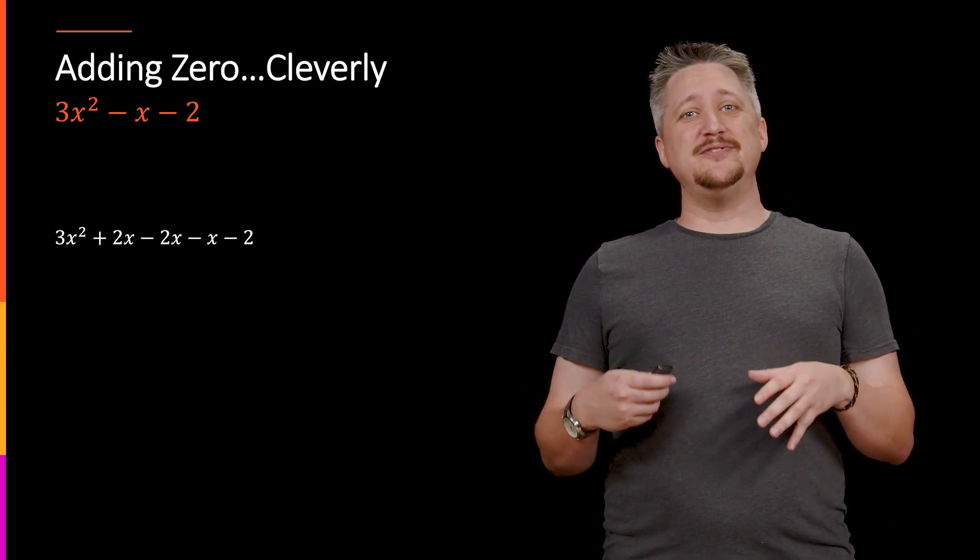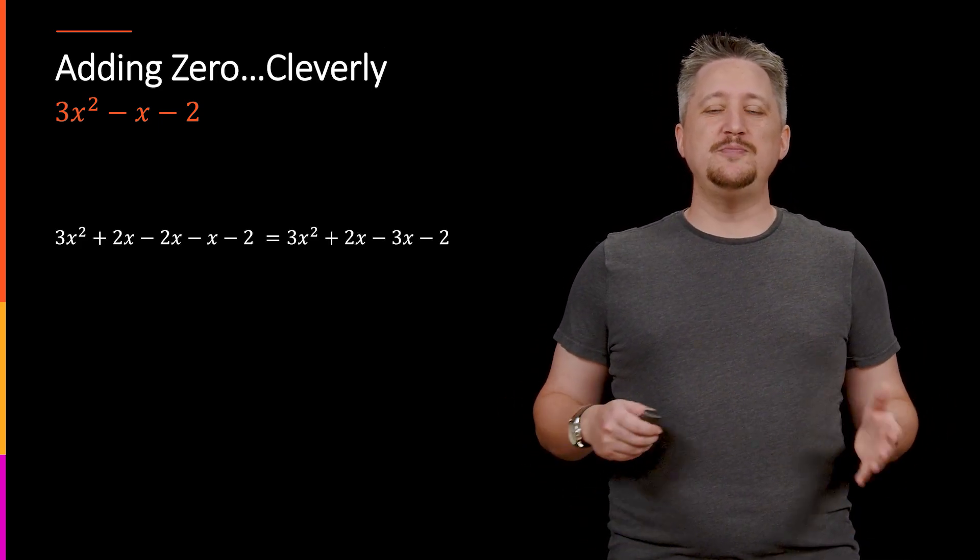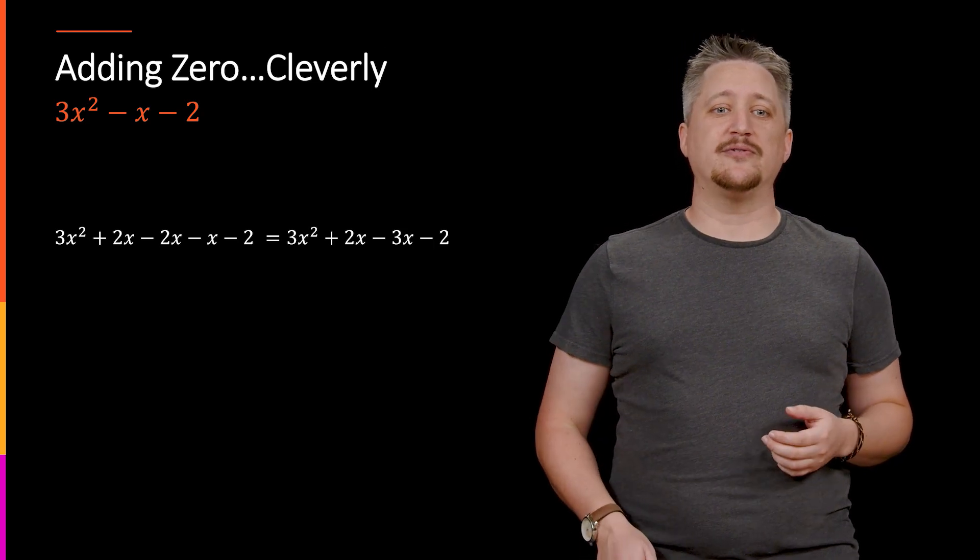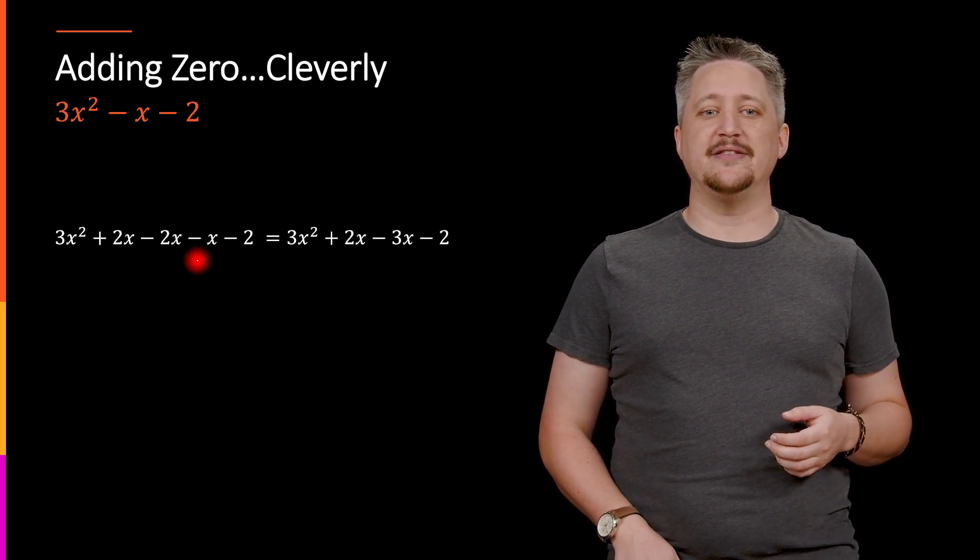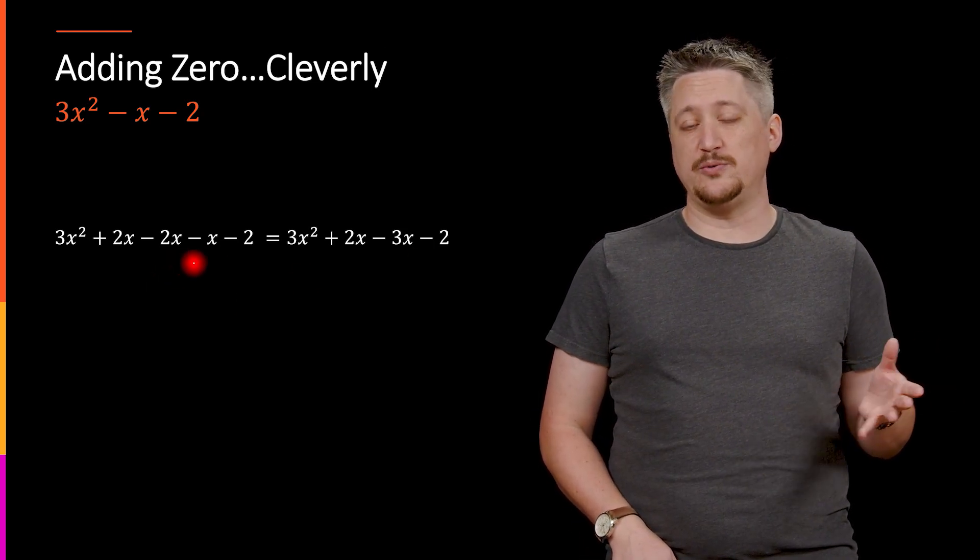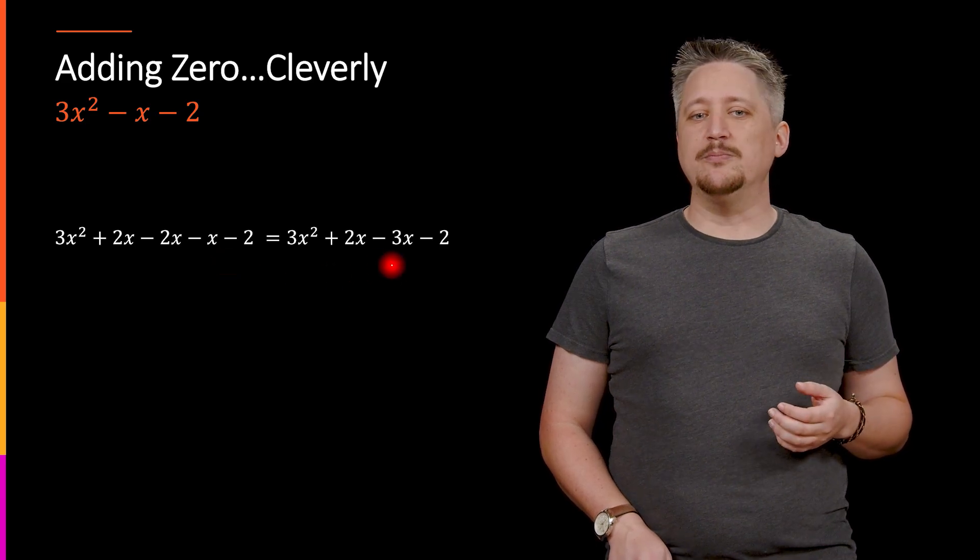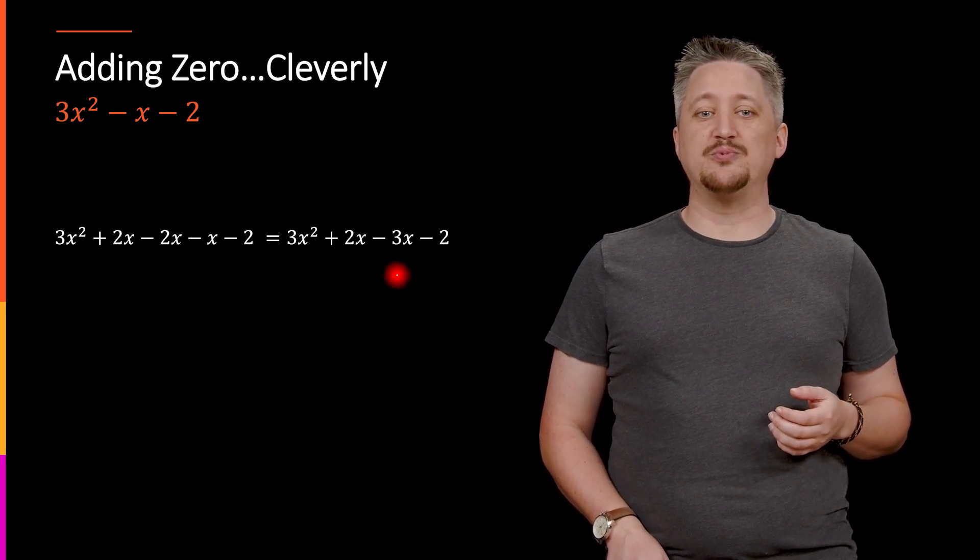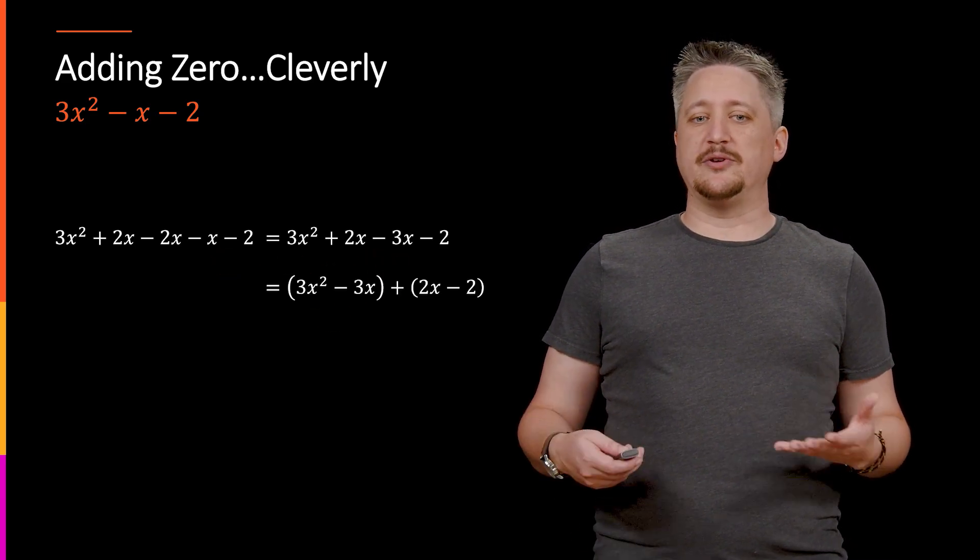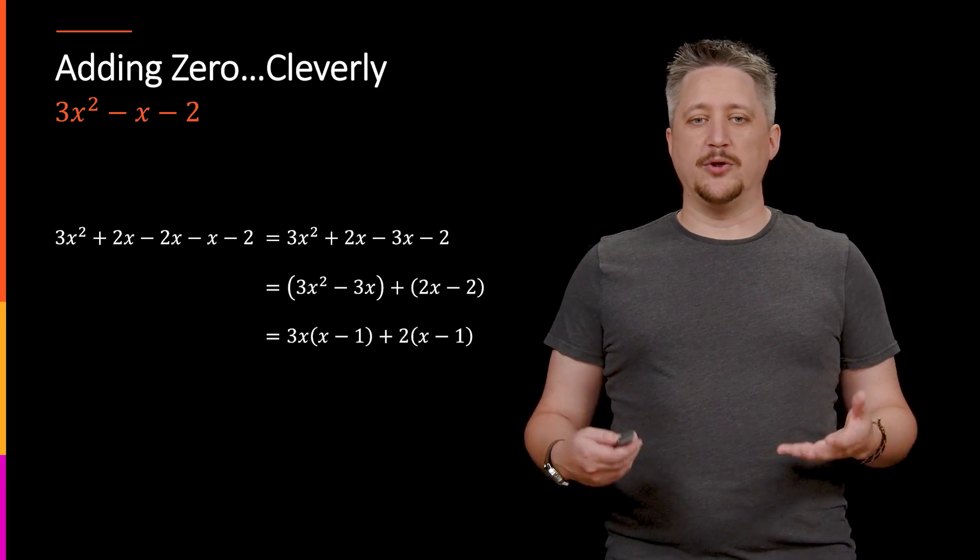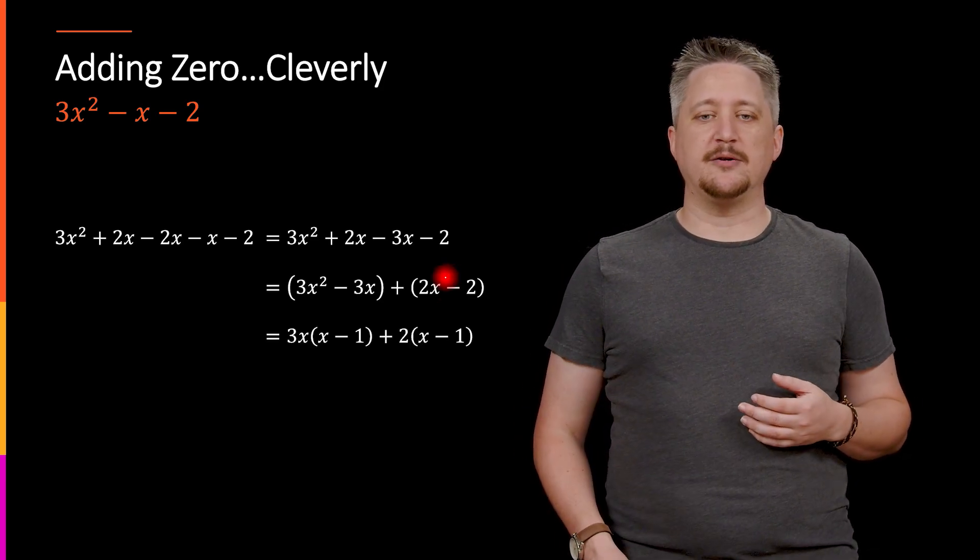But the good news is once I've done that, I can group them in such a way that now this thing becomes factorable. I can merge the 2x and the x over here or minus 2x minus x, but I don't merge the other two. And that's because now I can group these things and do something called factor by grouping where I pull out common terms.